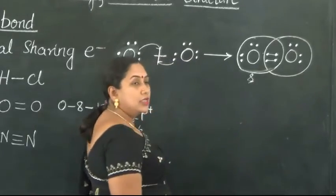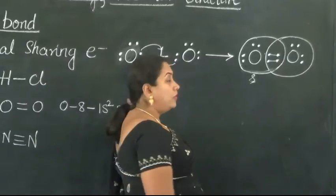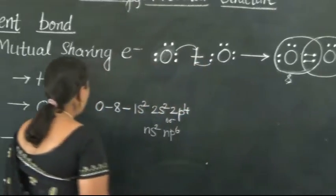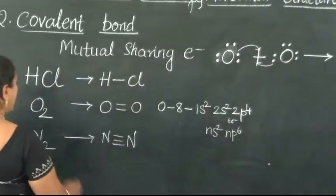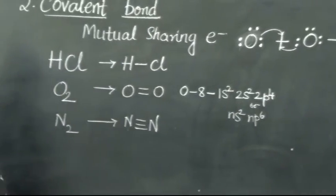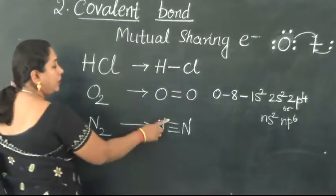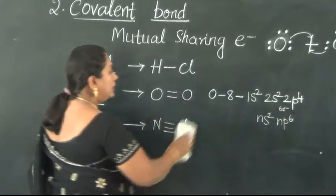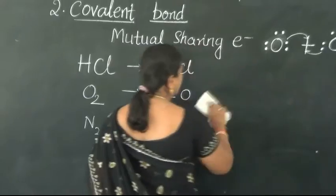This is an example where we find the existence of two covalent bonds. Now let us take up the example of the Nitrogen molecule, which is bounded by a triple covalent bond. Let us analyze this molecule clearly.